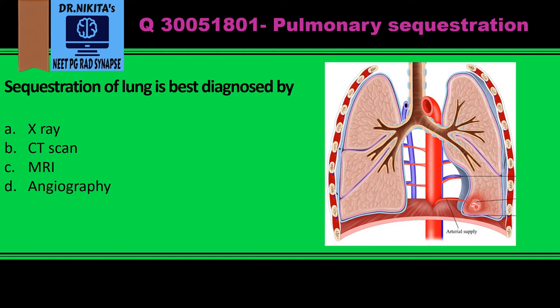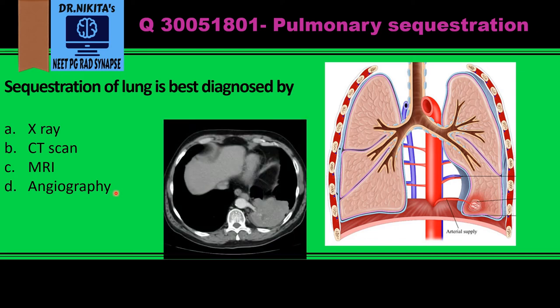The best way to diagnose lung sequestration is by determining the blood supply of that part, and that is why the answer here becomes angiography, which tells us the blood supply.